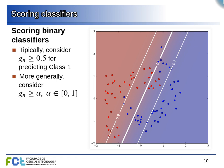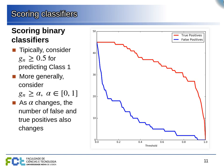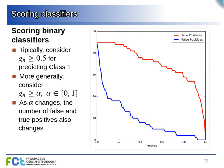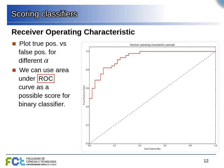As we increase the threshold further we begin losing true positives as well. At a threshold of 1 the classifier assigns everything to the negative class — no false positives but also no true positives. We can plot the true positive rate as a function of the false positive rate as we vary the threshold — this is the Receiver Operating Characteristic curve.